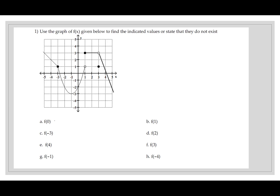At 0 it's going through negative 2, so we've got negative 2. For f of 1, there's an open circle at 1 and a closed circle at 3 — I want to use that closed circle, so the answer is 3. At negative 3 I see a dot at 1. At 2 where it's constant, the y value is 3.